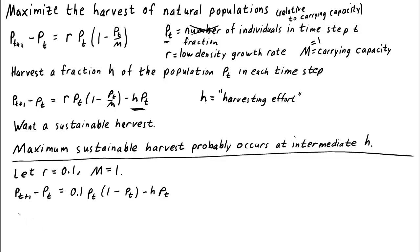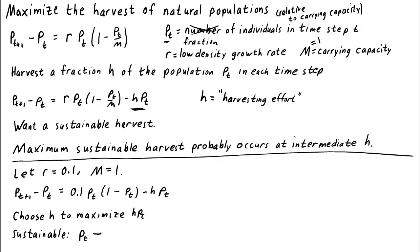So here's what we want to do: we want to choose the harvesting effort h to maximize the harvest, and the harvest is h times P sub t. But we want this harvest to be sustainable, which means we must set P sub t to be an equilibrium. Once P sub t settles down to an equilibrium value, then h times P sub t will be the amount of the sustainable harvest — the number we're trying to maximize.